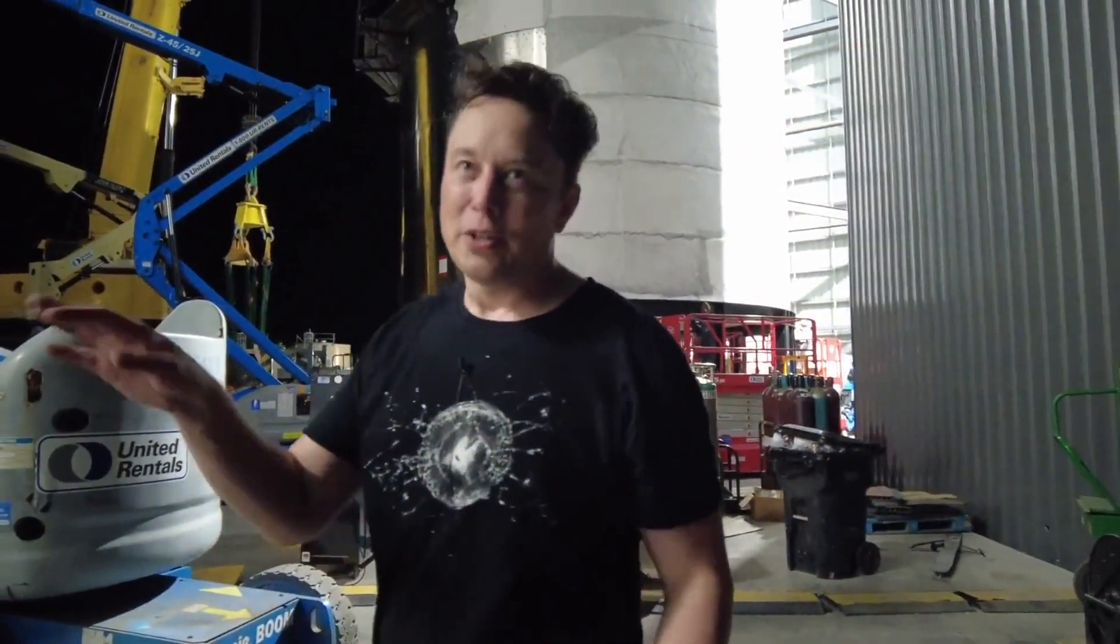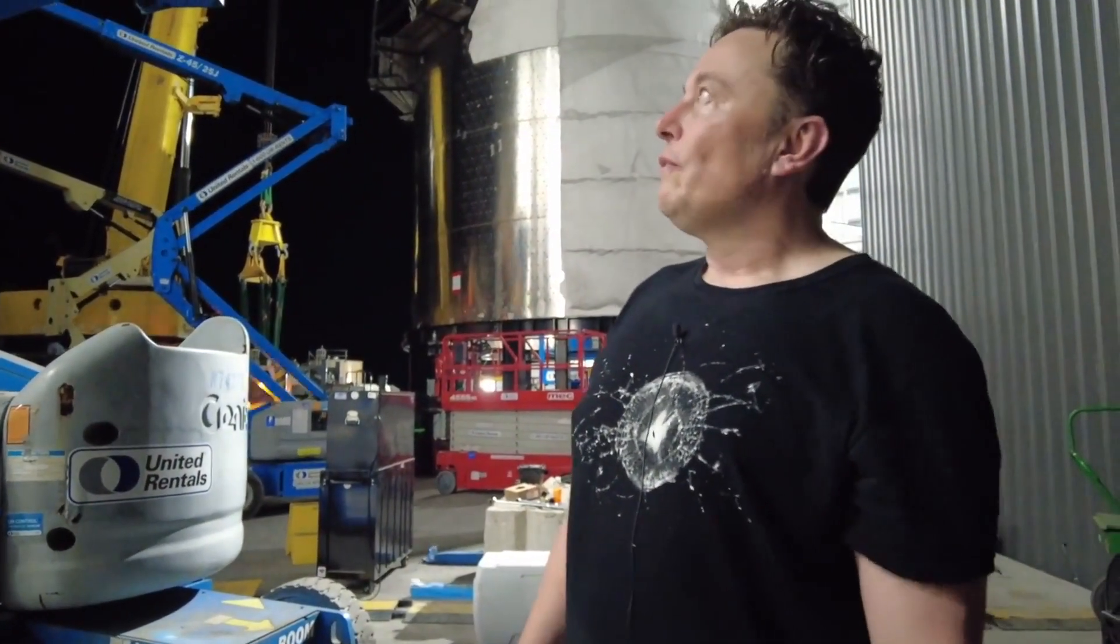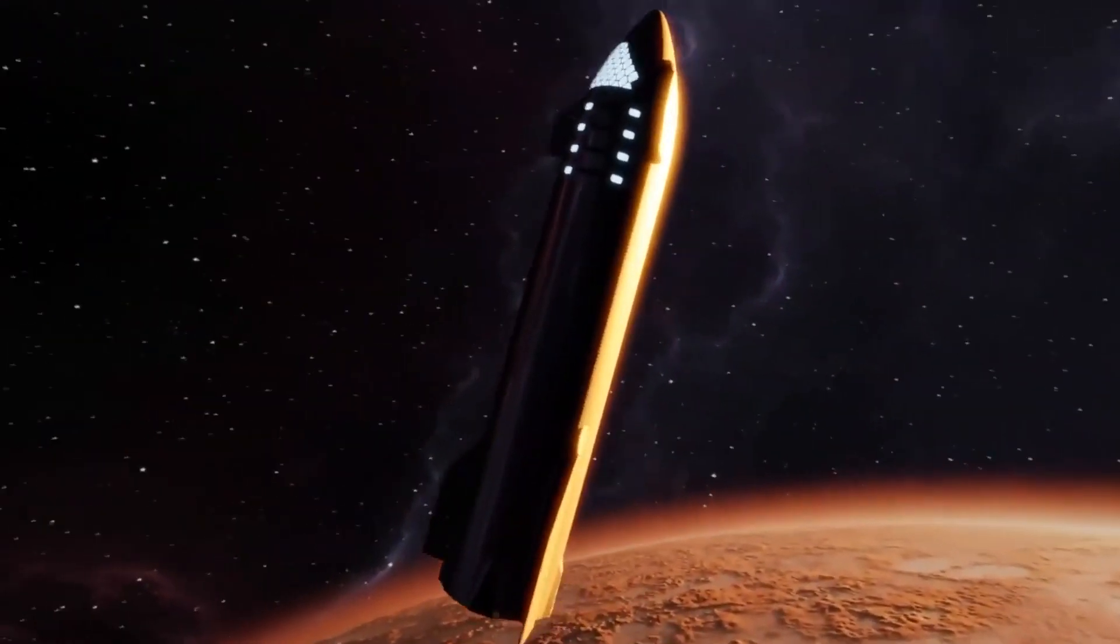Once the Starship rocket finally executes its orbital test flight, we'll get to see the heat shields fully in action. Well, hopefully not too much in action. In the same Everyday Astronaut Starbase tour, Elon described how he would actually be pleased with progress if the SN20 didn't explode on the ground, and he would be more than pleased if the rocket actually gets to orbit.